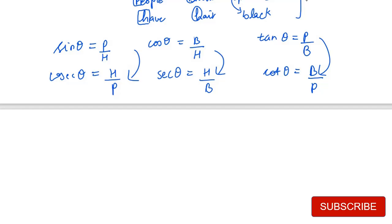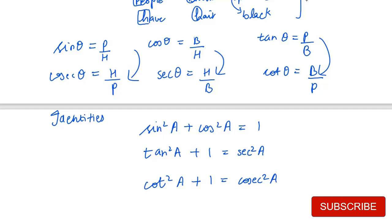One new thing is identities. This part should be very clear. The first identity that is most common and most used is sin square A plus cos square A equals 1. Then tan square A plus 1 equals sec square A. The third one is cot square A plus 1 equals cosec square A. These are the three identities you can use to solve trigonometry questions.